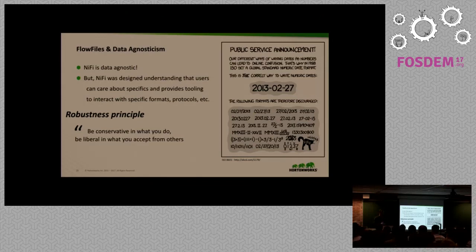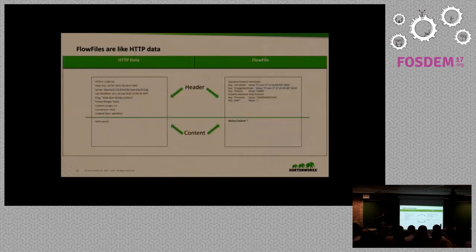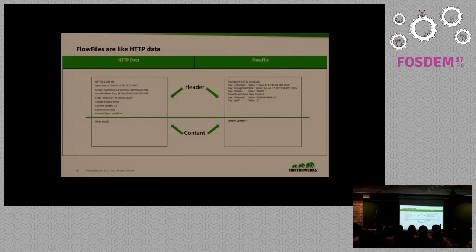NiFi allows you to do a lot of transformation and manipulation of formats and protocols within the tool. A really good example to understand a flow file is to think of it using the analogy of an HTTP response — you can see there's a header and then some content below. A flow file is very similar: we have attributes, which are key-value mappings, and then we have the binary content of the flow file.